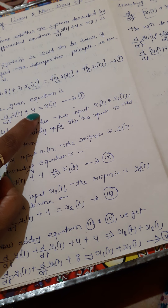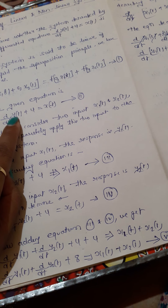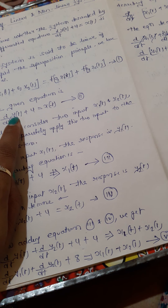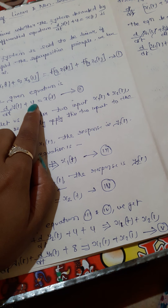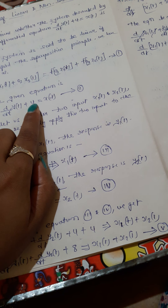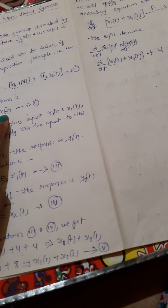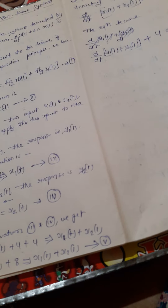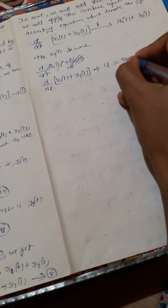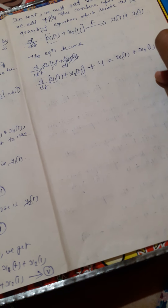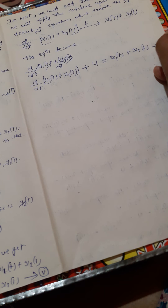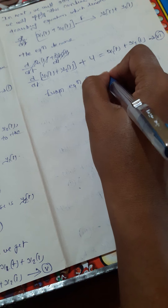Applying the combined input to d/dt of y(t) plus 4 equals x(t): in case of y(t), the combined input response is y1(t) plus y2(t), and the 4 is a constant — we do not need to add any additional constant here. So the result equals x1(t) plus x2(t). This becomes equation six.